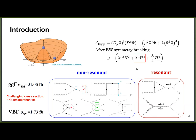The non-resonant signal is more Standard Model-like, produced via gluon-gluon fusion or vector boson fusion. The main challenge is its small cross-section — di-Higgs is around 1000 times smaller than single Higgs. It allows measurement of the trilinear coupling κλ and the VVH coupling from VBF diagrams. For resonant signals, we search for new heavy spin-0 or spin-2 particles that could decay into two Higgs bosons.